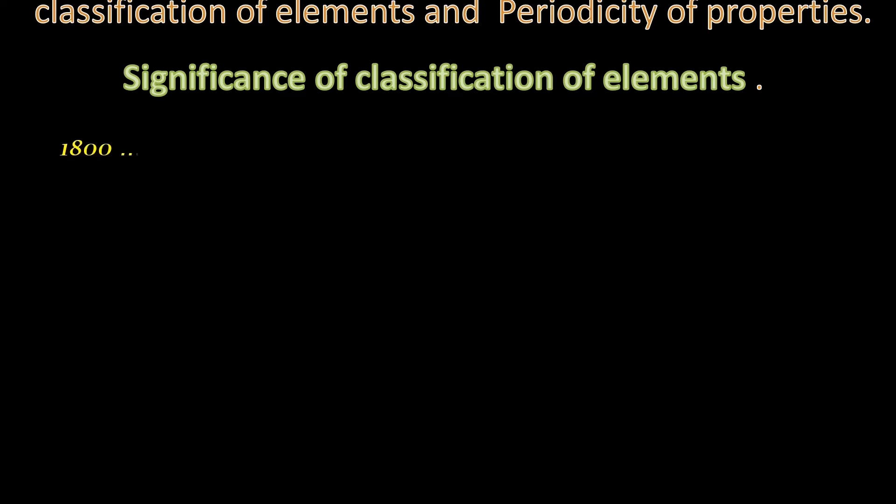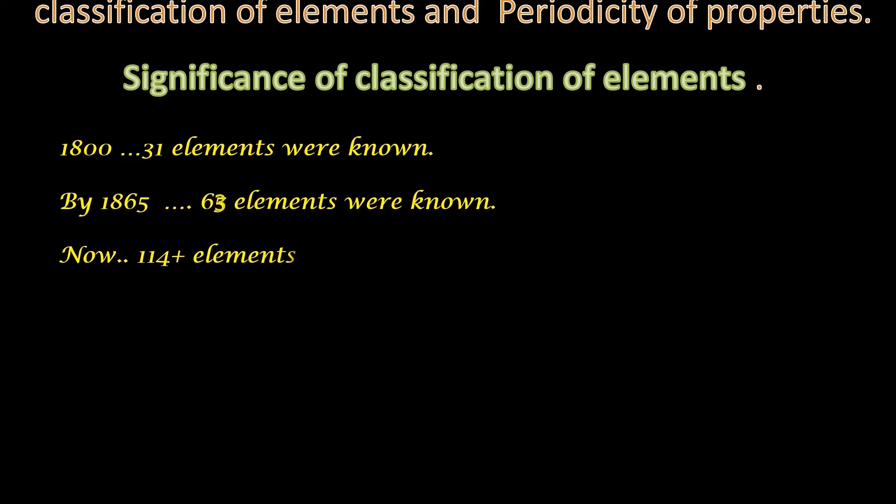Initially, that is in 1800, about 31 elements were known. Later on, by 1865, about 63 elements were known. By now, about 114 and more elements are known.